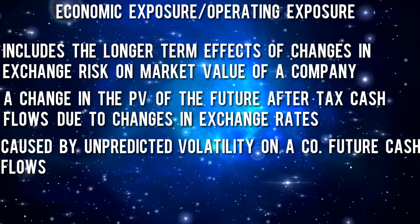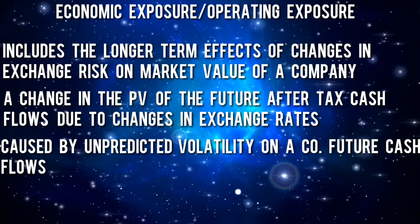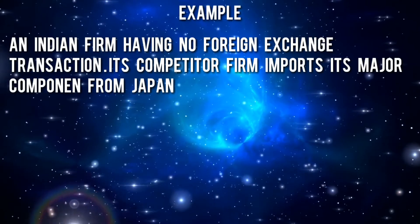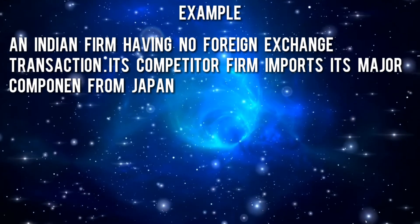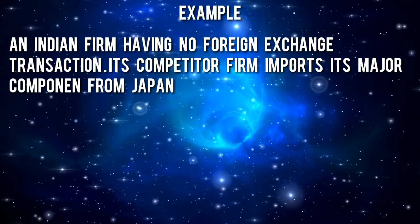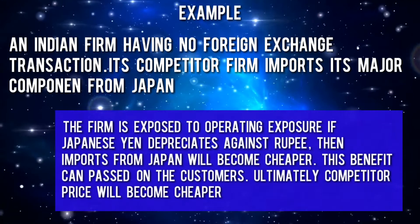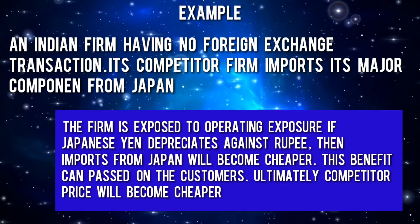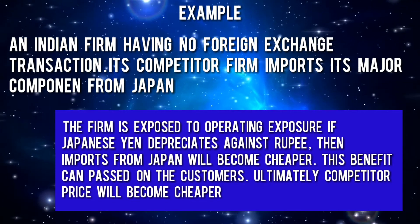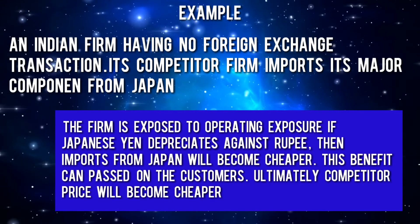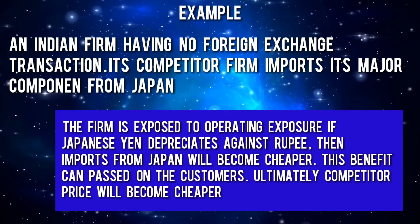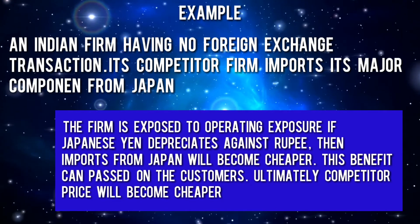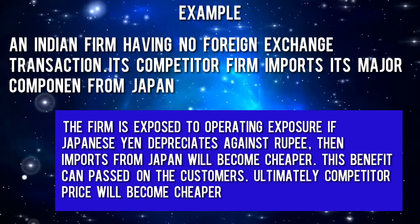This operating exposure can happen even if the firm has no transactions in foreign currency. For example, suppose an Indian firm has no foreign exchange transactions — no export, no import — but a competitor firm imports its major raw material from Japan. If the Japanese yen depreciates against the rupee, imports from Japan become cheaper, and that benefit can be passed on to customers. The competitor's price becomes cheaper, directly affecting the market share of the original firm. In short, changes in exchange rate affect the company's competitive position — this is known as operating exposure.